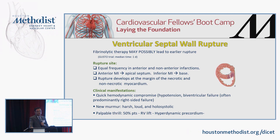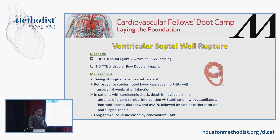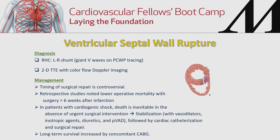Clinical manifestation is hypotension in patients presenting with acute infarct, which can develop into biventricular or right-sided failure. A loud, harsh holosystolic murmur is noted in about half the patients, with a hyperdynamic precordium. Management includes echocardiogram with color flow Doppler imaging, and in the cath lab there will be a step-up of oxygenation from the right atrium to the right ventricle.